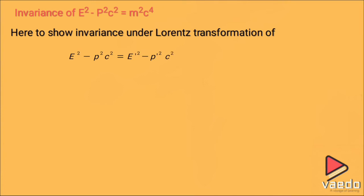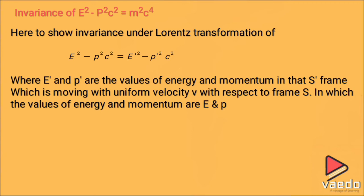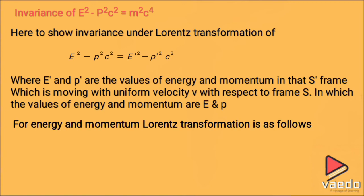We need to prove that E² − p²c² = E'² − p'²c², where p is momentum in frame S, E is energy in frame S, E' is energy in frame S', and p' is momentum in frame S'. Using the Lorentz transformation for energy and momentum, we write E' = (E − pv) / √(1 − v²/c²).